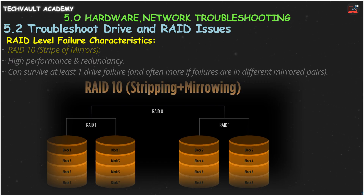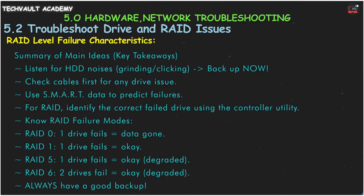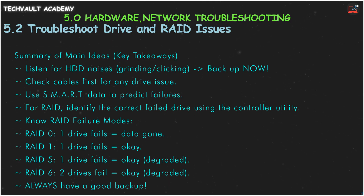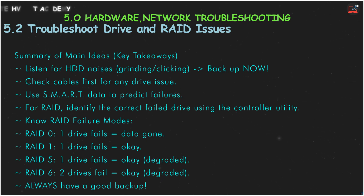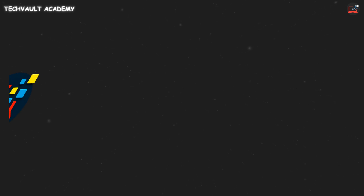For your A+ exam, here are the main ideas. Listen for grinding or clicking noises from HDDs and back up immediately. Check cables first for any drive issue. Use SMART data to predict drive failures before they happen. For RAID, listen for alarms and use the controller utility to identify the failed drive. Know your RAID failure modes: RAID 0 has no redundancy, RAID 1 survives a single failure in a pair, RAID 5 survives one drive failure, RAID 6 survives two drive failures. And most importantly, a good recent backup is your ultimate protection against any drive or RAID failure. That's our rapid review of drive and RAID troubleshooting. Thanks for watching TechBall Academy.